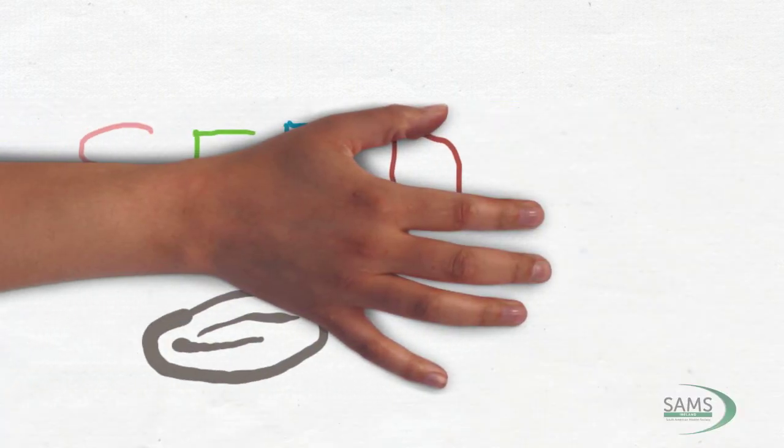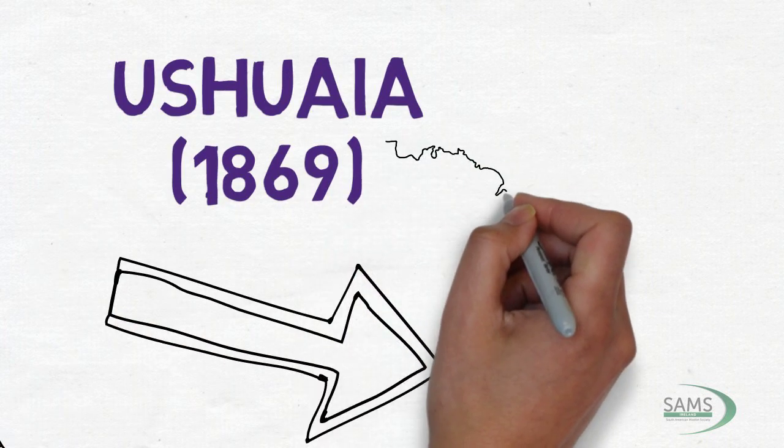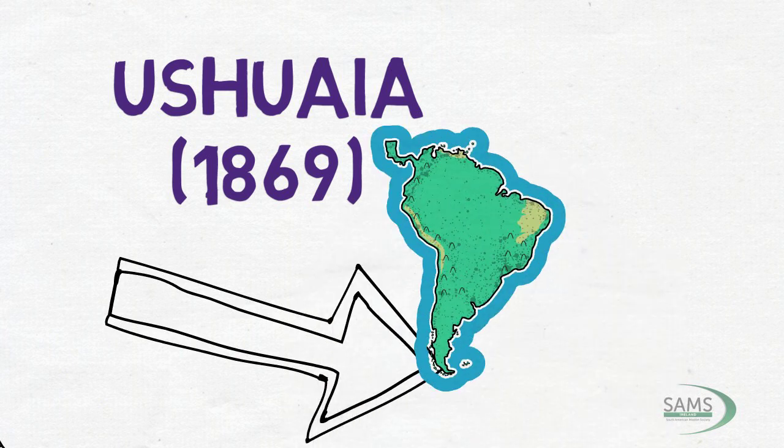The Patagonian Mission Society was formed from this seed. The first church was established in Ushuaia, 15 years after Alan Gardner's death.